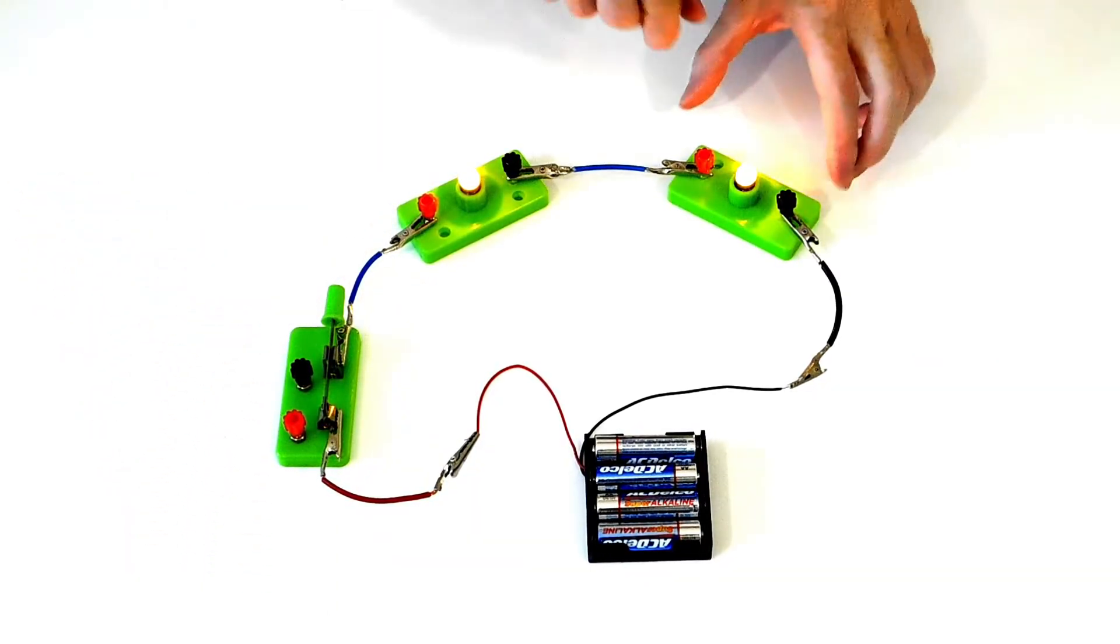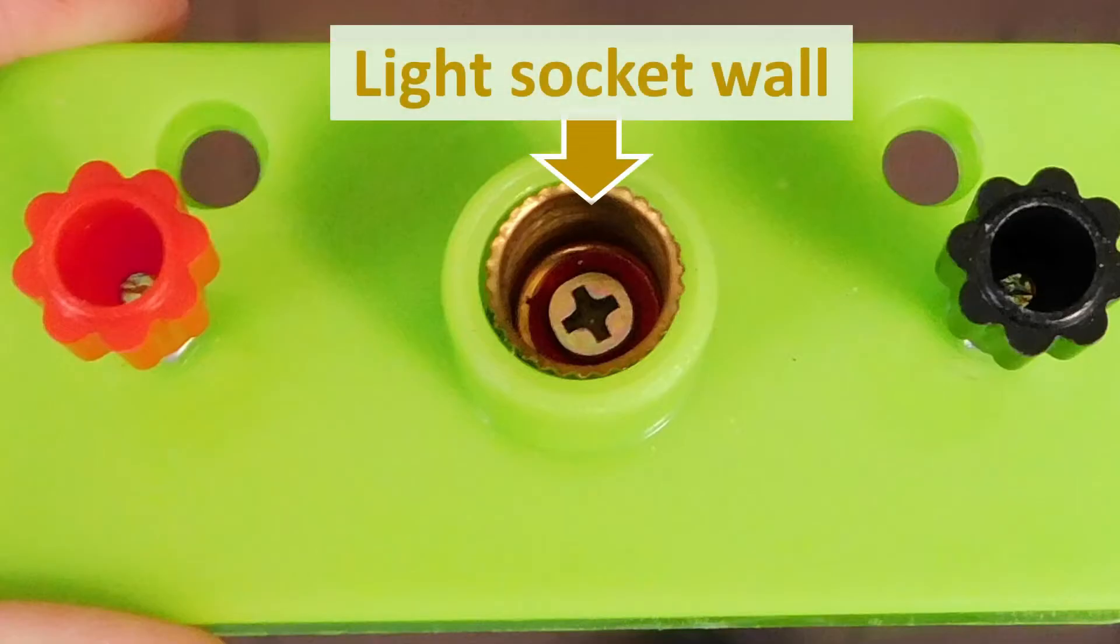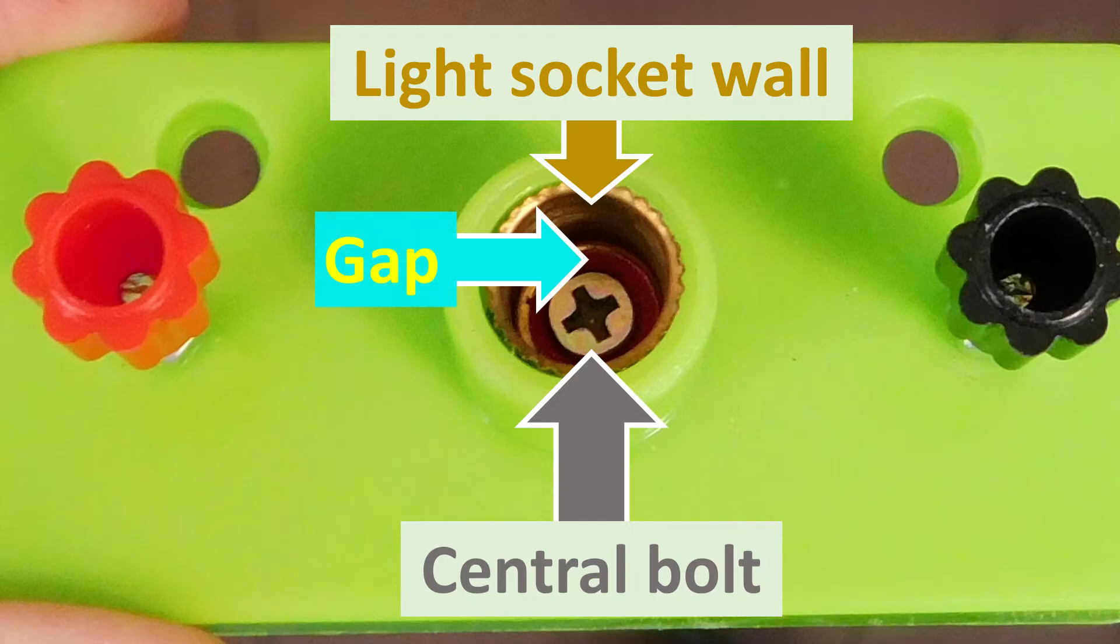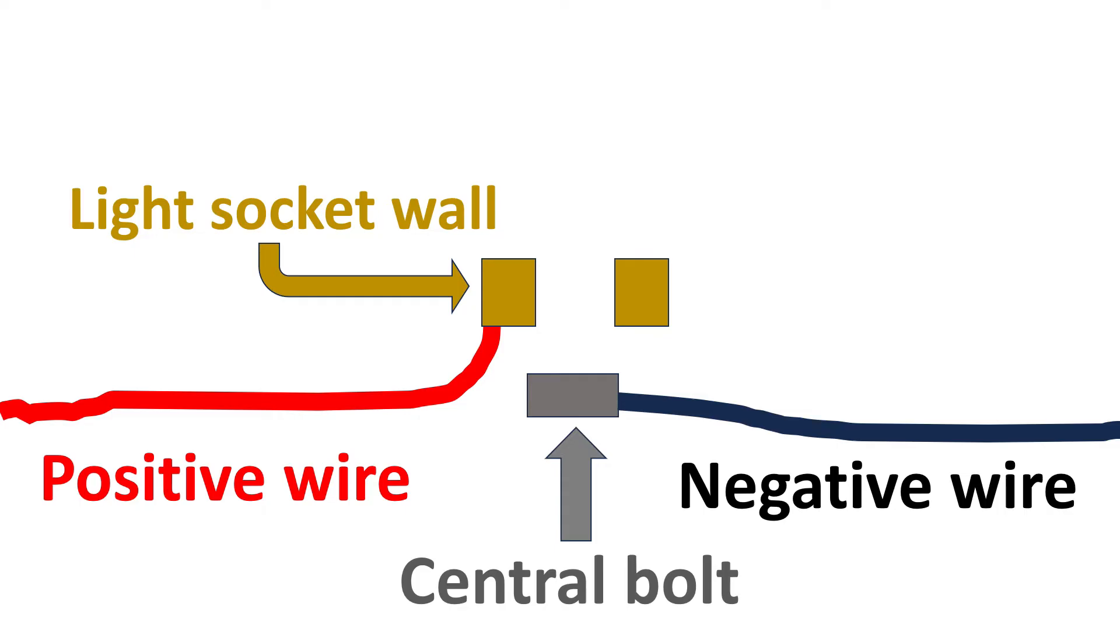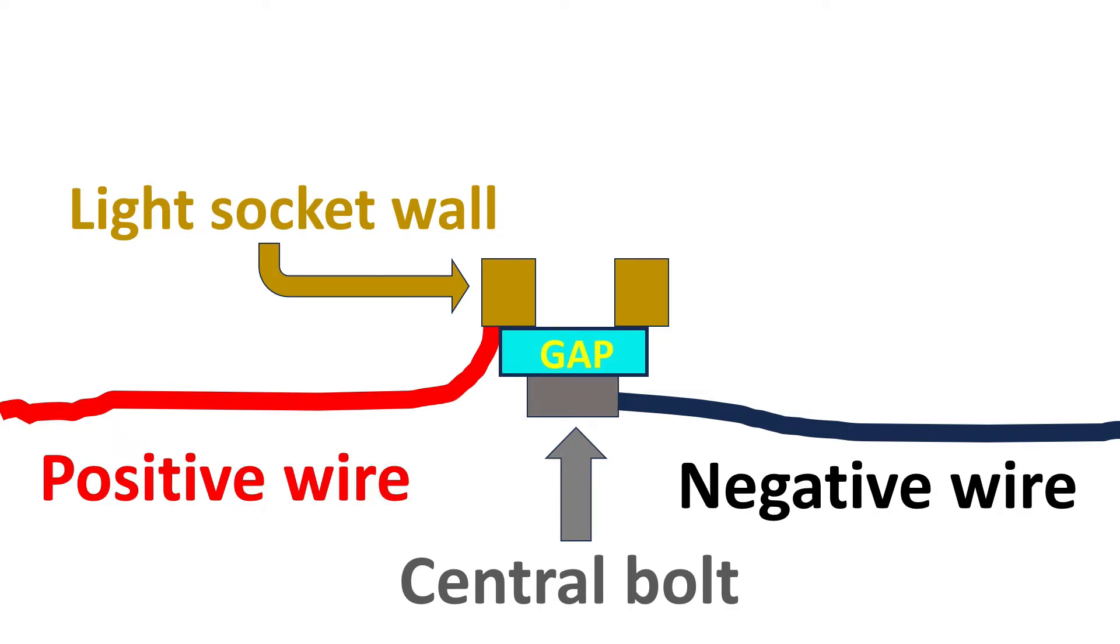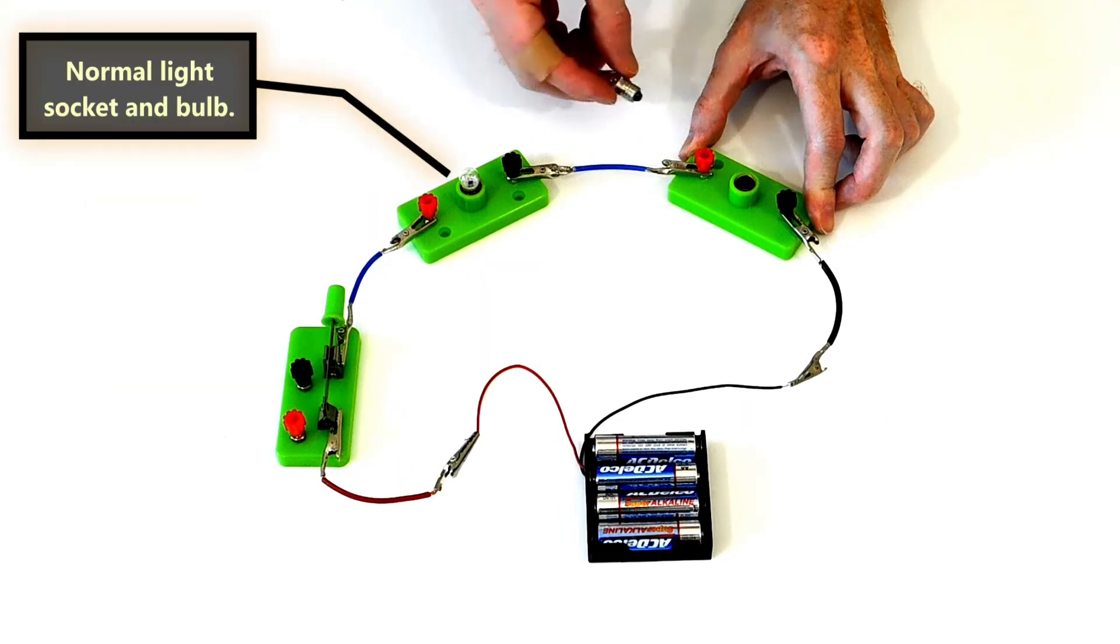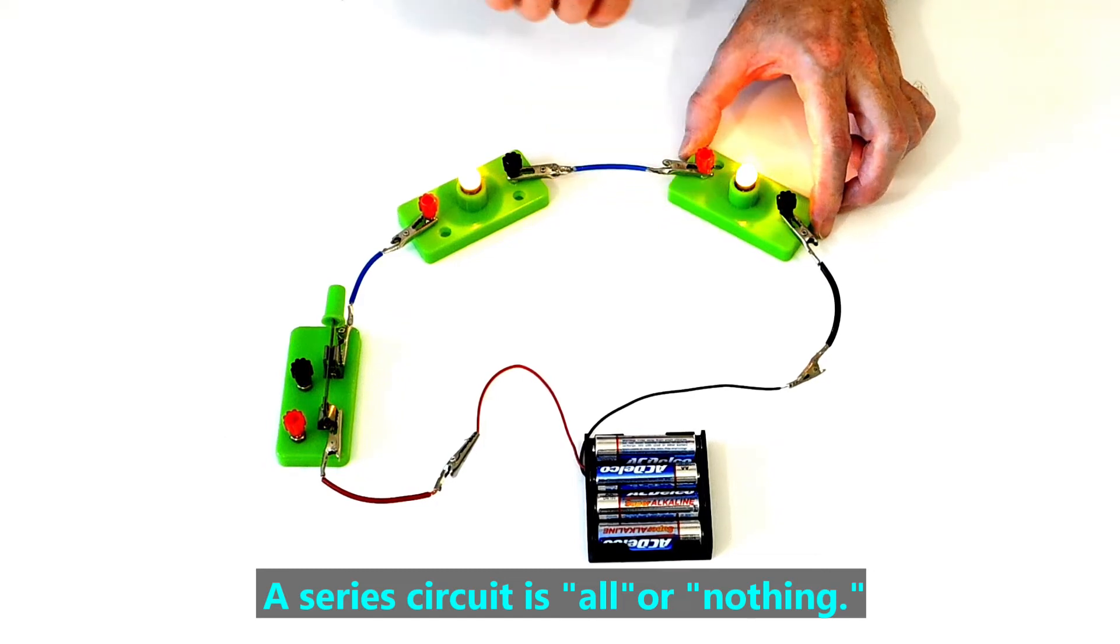Things work very well with the series circuit design until there is a break in the circuit. For example, if a light bulb is missing or broken, then the good light bulb goes out too. To understand why this happens, let's look at the light socket a bit more closely. We can see there is a tiny gap between the metal wall and the central bolt. That gap is a break in the circuit. The light socket wall is connected to a positive wire that carries electricity from the battery. The central bolt is connected to a negative wire that carries electricity to the battery. There's a large gap between the light socket wall and the central bolt. When there's a light bulb in the socket, it fills the gap so electricity can flow through the circuit. But if that light bulb is missing or broken, then there's a gap, so electricity doesn't flow through the circuit. When electricity doesn't flow in the circuit, that means even a normal light socket with a bulb will not work. To summarize, a series circuit is all or nothing. Either all the parts work or none of them will work.